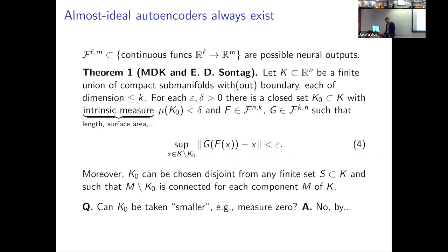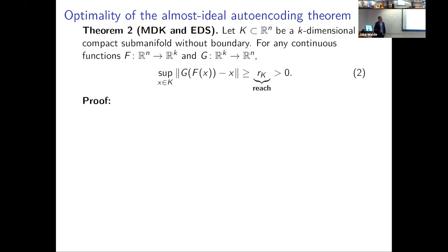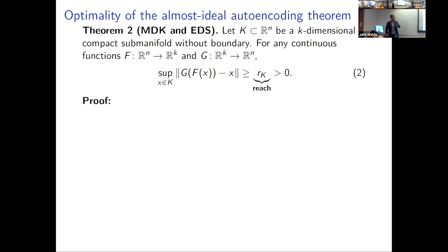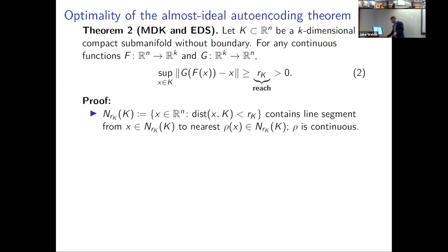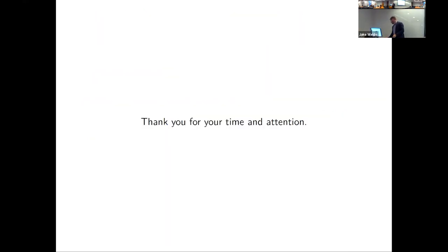You can ask whether this result is optimal — can you take the bad set to be measure zero? The answer is no. For a compact manifold without boundary, in the supremum norm, your autoencoder will always have to do worse than some well-defined number related to the reach, which is related to curvature. So even though you can always get the L2 norm arbitrarily small, the supremum norm will always be at least as big as this reach number. The proof uses degree theory and Čech cohomology. In summary: deep neural network autoencoders — topology says they can't work, and yet they do; I've offered an explanation why.